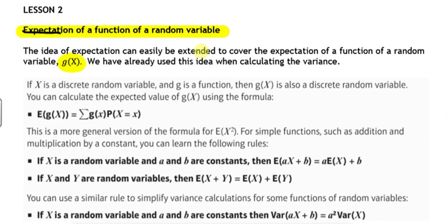If x is a discrete random variable then g of x will also be a discrete random variable and we can work out the expectation of any g of x by using the formula the sum of g of x multiplied by the probability. It's the same idea that we used when we worked out the expectation of x squared. If you remember the expectation of x squared we squared the x values to work out x squared and then multiplied them by the probabilities, and that can be generalized to any function g of x.